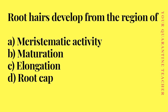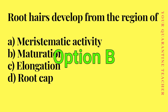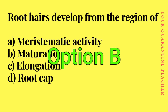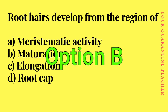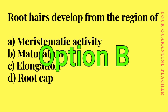Next question: root hairs develop from the region of — this is an important question. Option A: meristematic activity, Option B: maturation, Option C: elongation, Option D: root cap. The answer is Option B — the maturation region is where root hairs develop.